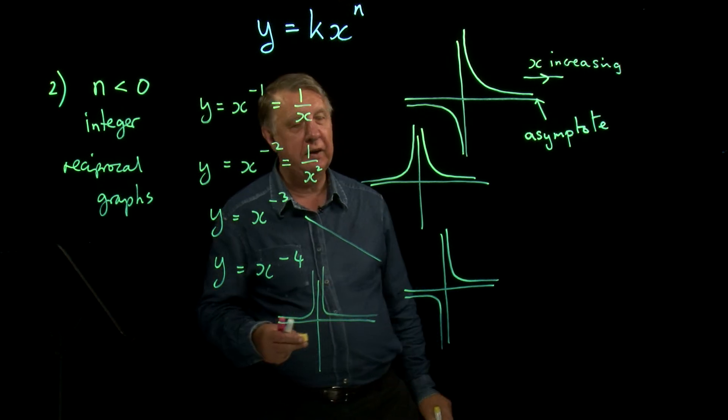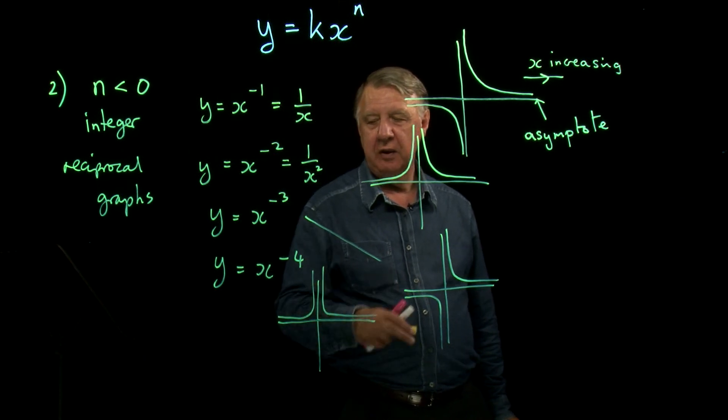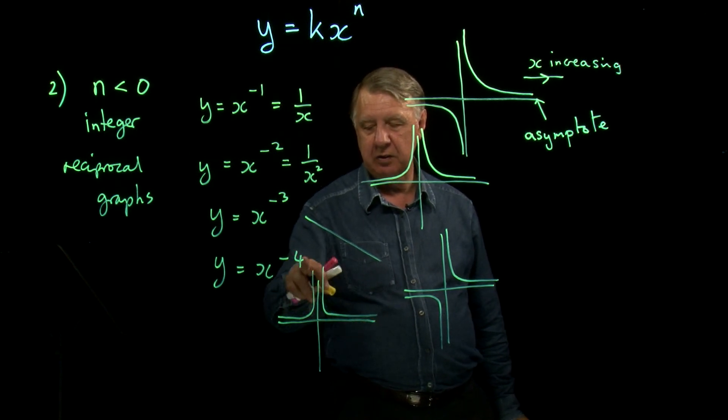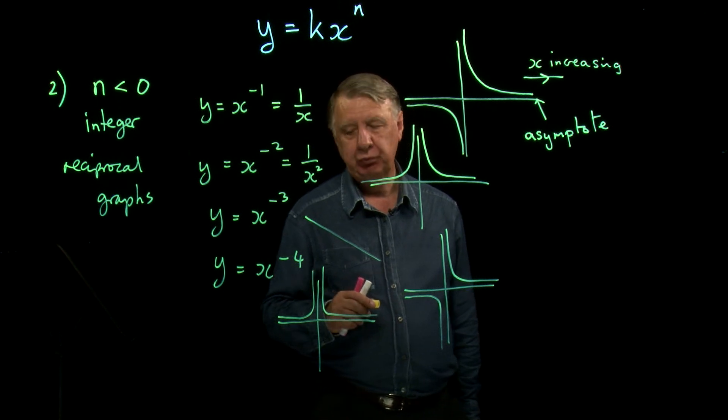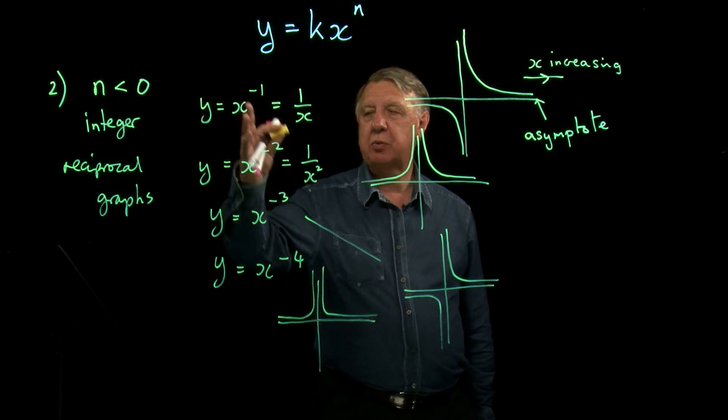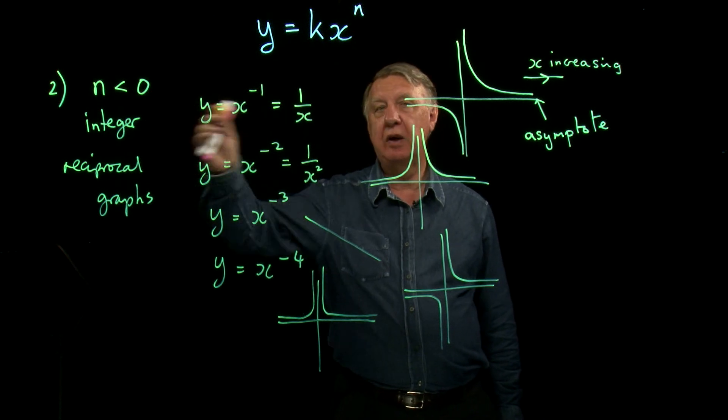And notice I'm trying harder to make them look a little bit squarer. The bigger the power here, the closer these things get to looking like squares. So that's what happens then when n is a negative integer.